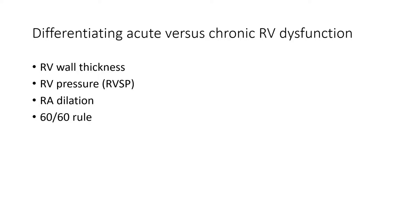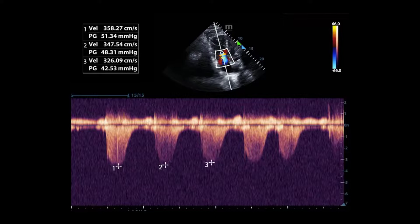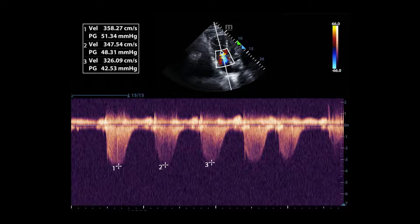In terms of differentiating acute versus chronic RV dysfunction, signs to consider include: RV wall thickness, RV systolic pressure (RVSP), and right atrial dilatation — which should be more present in chronic RV dysfunction. The 60-60 rule states that if the pulmonary artery systolic pressure is less than 60 and greater than 30, with an acceleration time less than 60, the 60-60 sign is present — 94% specific for acute cor pulmonale due to acute pulmonary embolism. Continuous wave Doppler through the tricuspid valve allows calculation of the gradient across the valve; adding the right atrial pressure yields the right ventricular systolic pressure.